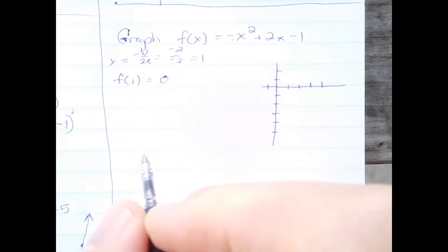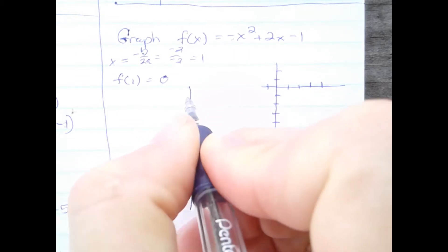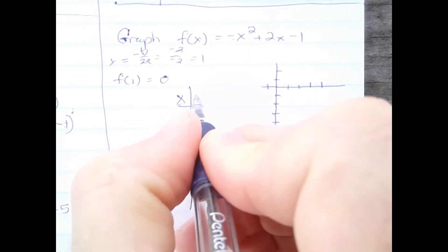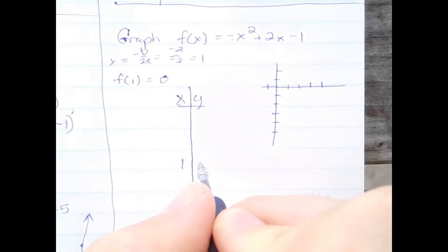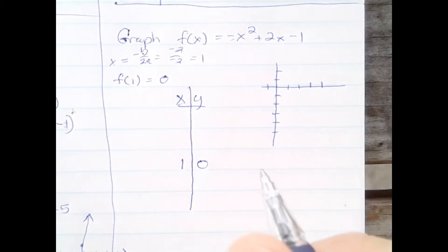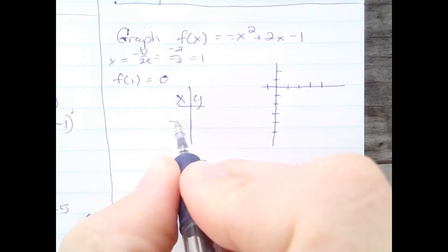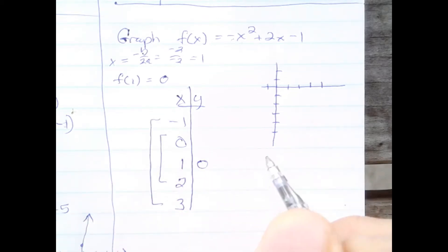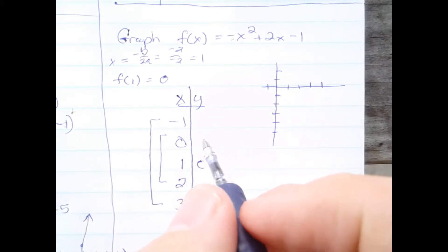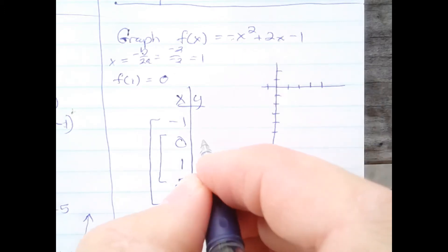We're going to use that to make a t-chart with x and y, with 1 and 0 being the starting point. We're going to go 2 to the right of 1: x equals 2 and 3. And 2 to the left of 1: x equals 0 and negative 1. Because of symmetry, these y values will be the same. Plugging 0 into the function, I get negative 1. That means if I plug in 2, I also get negative 1.